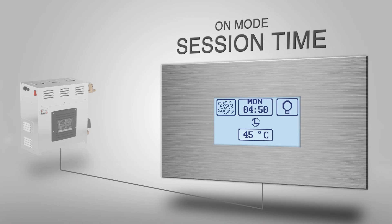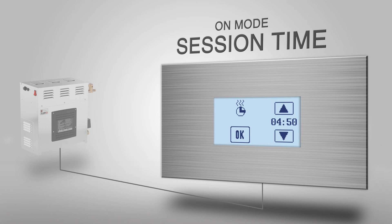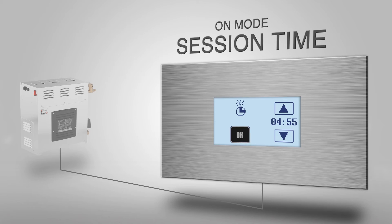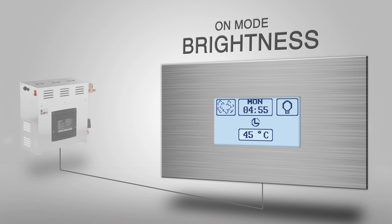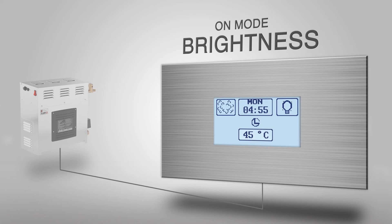To modify the session time, click the day and session time bar. As before, change the value from the arrow icons. Add brightness into your steam room by pressing the light icon.